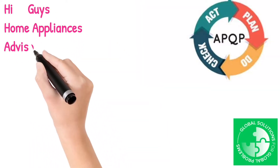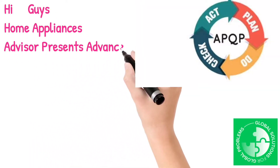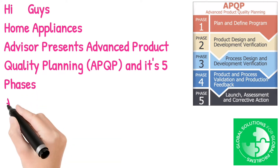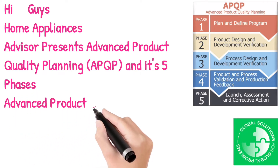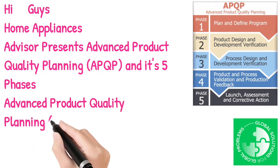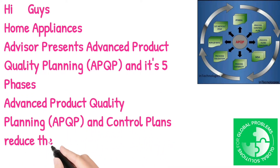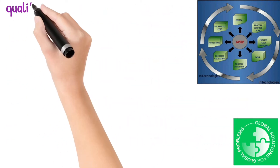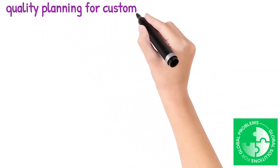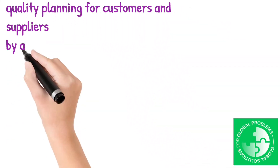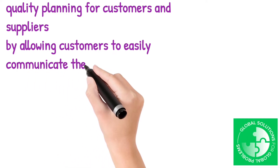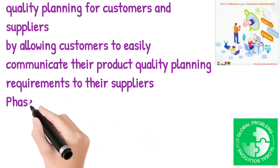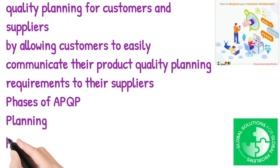Home Appliances Advisor presents Advanced Product Quality Planning, APQP, and its 5 phases. Advanced Product Quality Planning, APQP, and Control Plans reduce the complexity of product quality planning for customers and suppliers by allowing customers to easily communicate their product quality planning requirements to their suppliers.